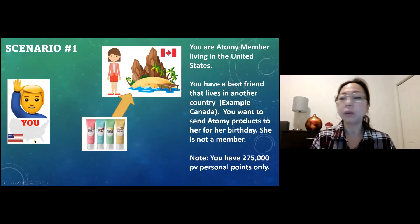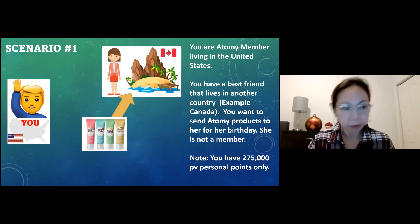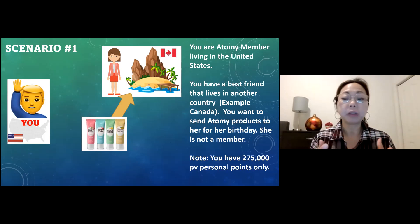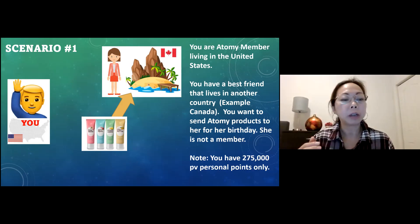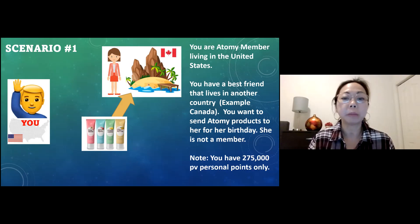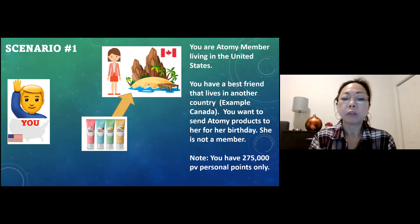Scenario one: you're here in the United States and you have a good friend in Canada you want to send products to for her birthday, but she's not a member. Your personal points are only 275,000, so you want to add points to yourself. Since we want the points to go to ourselves, we log in under our own account. For uniformity, start with atomy.com/us — the US website. Log in with your ID number and password and click log in.